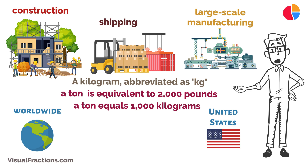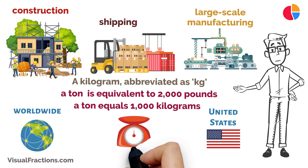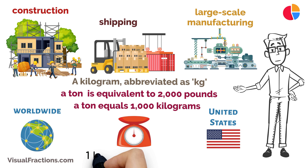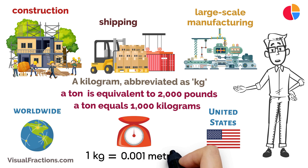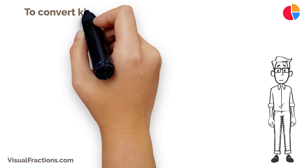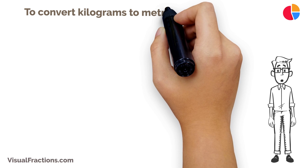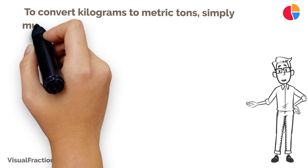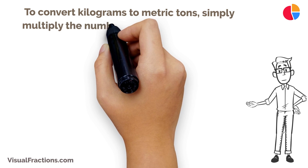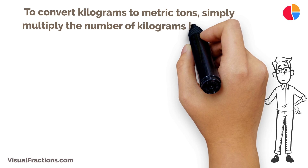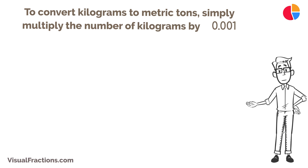Since we're focusing on the metric ton, here's the essential part: 1 kilogram is equal to 0.001 metric tons. To convert kilograms to metric tons, simply multiply the number of kilograms by 0.001.